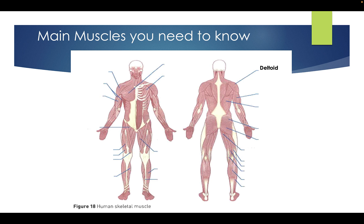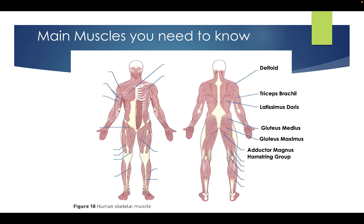So we have the deltoid, the tricep brachii, the latissimus dorsi, the gluteus medius, the gluteus maximus, the adductor magnus, and the hamstring group — so the bicep femoris, the semitendinosus, the semimembranosus, and the gastrocnemius.